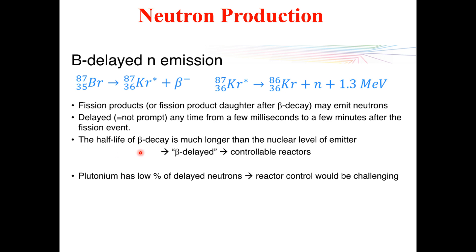The half-life of beta decay is much longer than the nuclear level lifetime of the emitter, meaning we are dealing with a controllable reactor process. Plutonium has a low percentage of delayed neutrons, which normally makes reactor control more challenging.